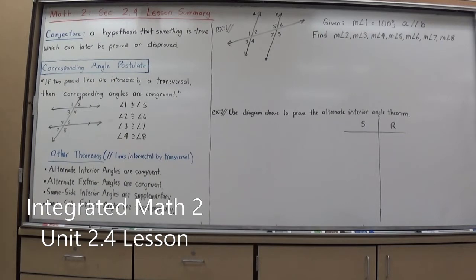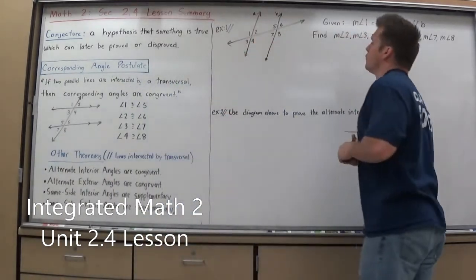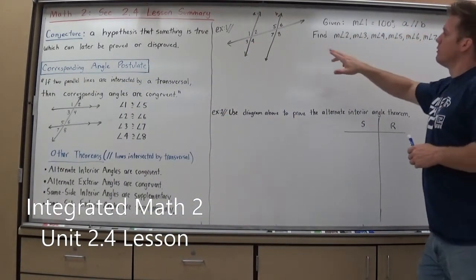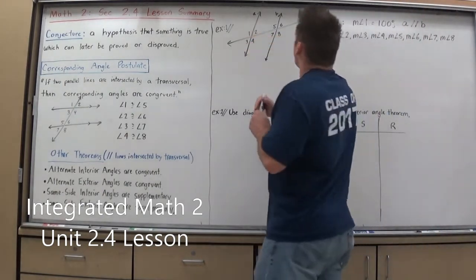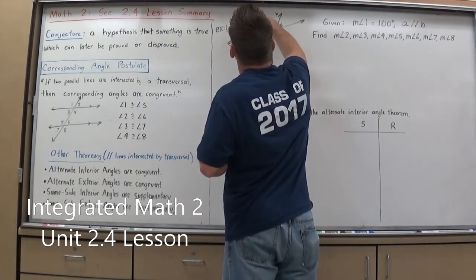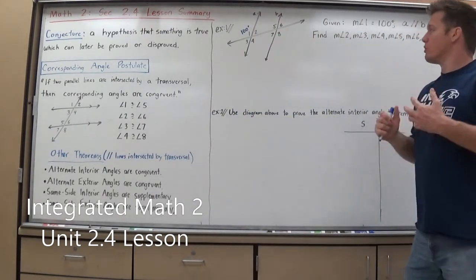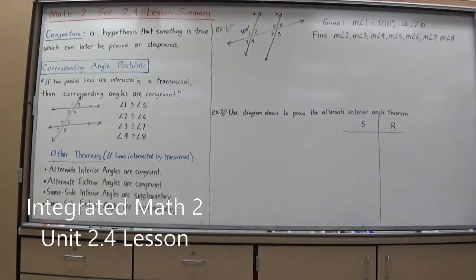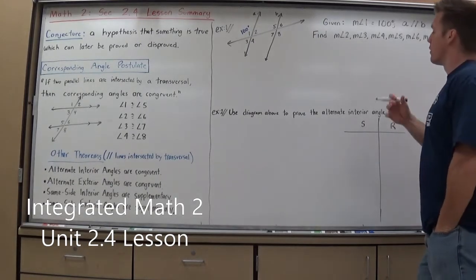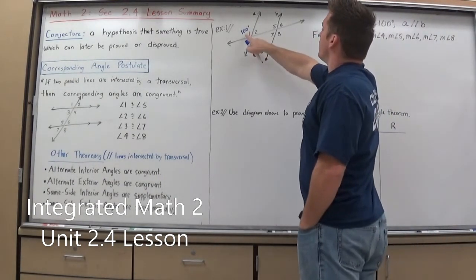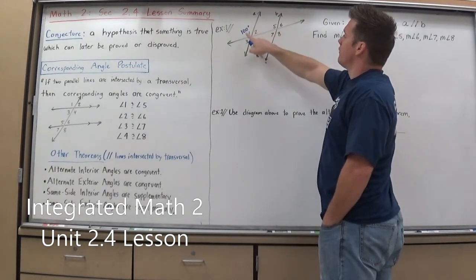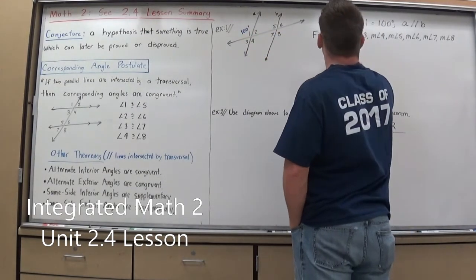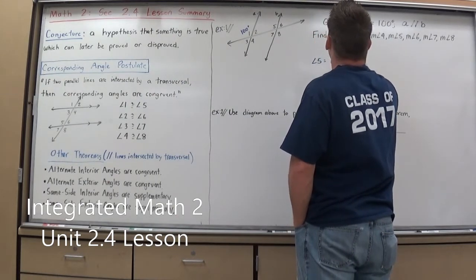We're going to use these rules to find missing angle measures and do proofs. In my first example, I have two parallel lines, so A is parallel to B, which means I can use the Corresponding Angle Postulate. I'm given that angle 1 is 100 degrees. The postulate states its corresponding angle, angle 5, which is also in the top left position, is also 100 degrees.